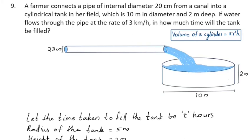A cylindrical pipe is connected from a canal into the tank to fill the water. Here is the canal, and from this canal, this cylindrical pipe is connected into the tank. The speed of water that flows through the pipe is given as 3 km per hour. That means the water reaches up to a length of 3 km through the pipe in 1 hour.